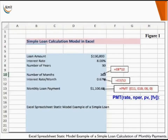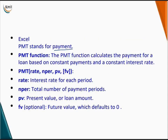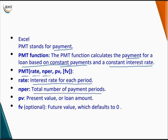We will consider a simple loan calculation model in Excel using the PMT function. PMT stands for payment. The PMT function calculates the payment for a loan based on constant payments and a constant interest rate. PMT takes the following arguments: Rate — the interest rate for each period; NPER — the total number of payment periods; PV — the present value or loan amount; and FV — the future value, which defaults to 0.